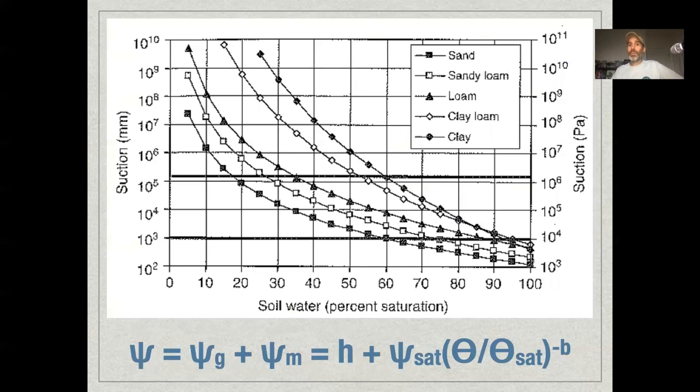that's where we require the least suction to remove moisture. And even there, we can see that there's still a gradient. So the things that require the least moisture are going to be sand, which makes sense.